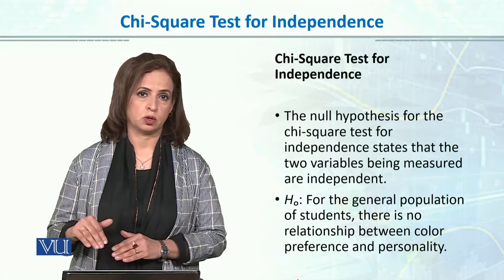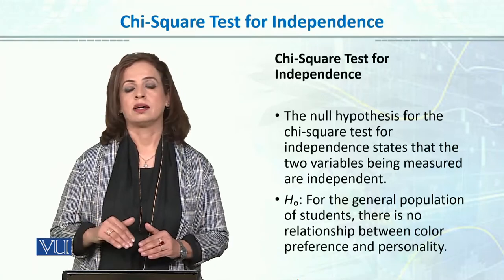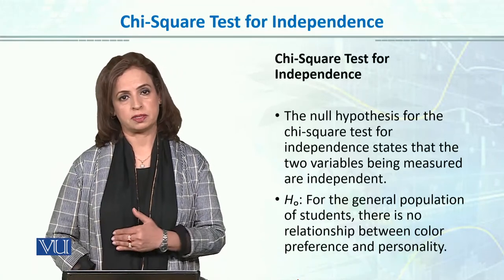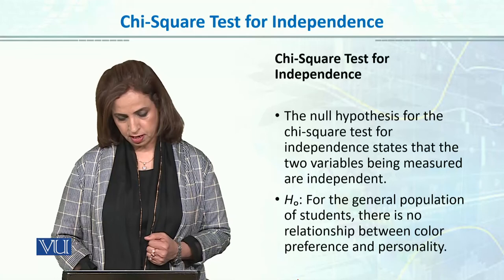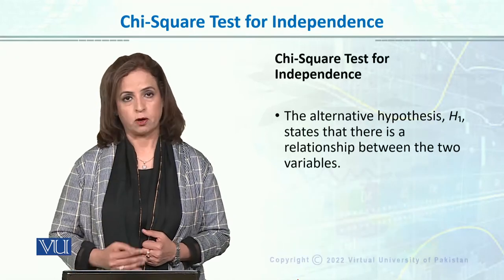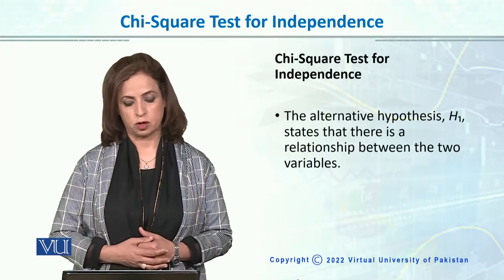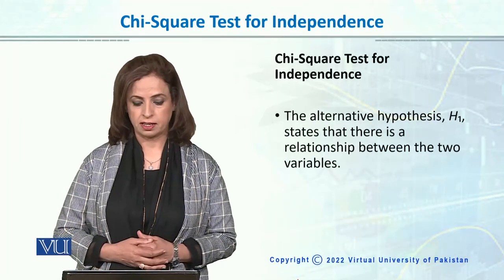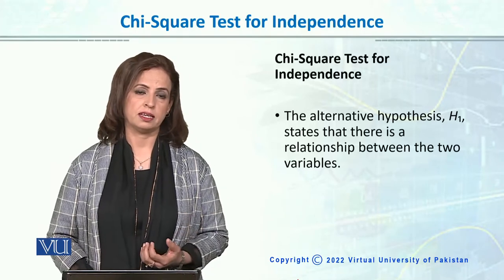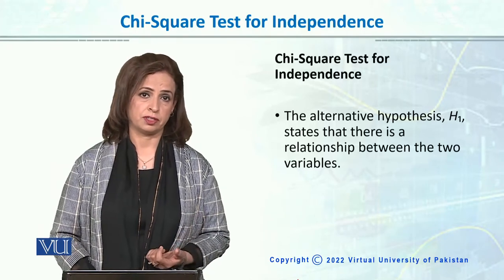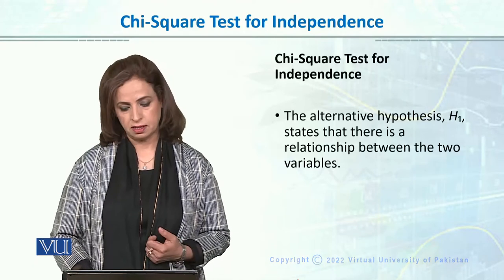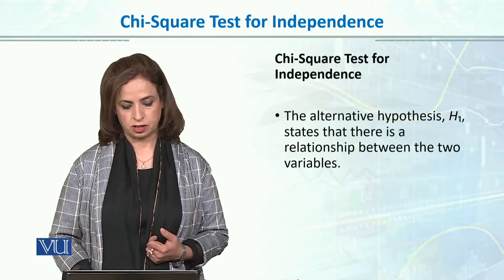For the example discussed, the null hypothesis states that for both variables — personality and color choice — there is no relationship between the two variables. The alternative hypothesis states that there is a relationship between the two variables, i.e., between color preference and personality, there is a link or a relationship.